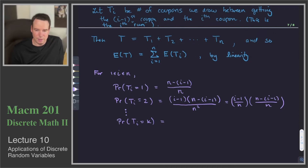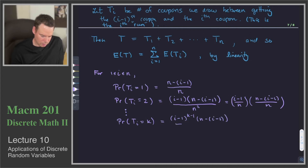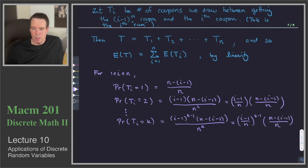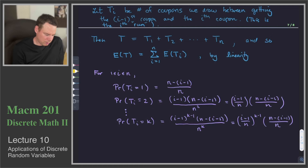For a run of length k, it means I pick a repeat k−1 times and then get the new one. So P(T_i = k) = (i−1)^(k−1) / n^(k−1) times (n−(i−1)) / n. Regrouping, that's ((i−1)/n)^(k−1) times (n−(i−1))/n — the probability of k−1 repeats times the probability of getting a new one on the kth draw of that run.